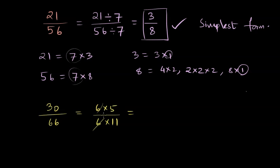You can also write 30 by 66 as 30 divided by 6 and 66 divided by 6 because you know that 6 is a common factor. Once you do that, you get 5 divided by 11. This is the same thing here. Is there any factor that divides 5 and 11? No. And that's why this is the simplest form.